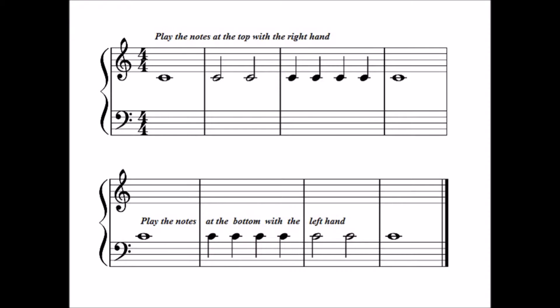On the music you can see that the first half of the rhythm is written on the top set of lines, known as a stave, and the second half is written on the bottom stave.